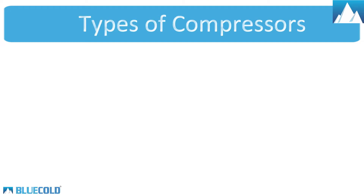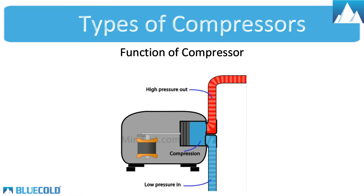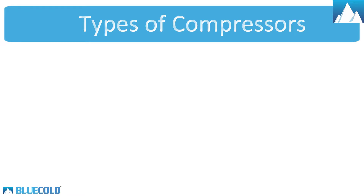Types of Compressors. Let's understand first, what is the main function of the compressor? The compressor will compress the refrigerant to a temperature greater than the ambient temperature. There are typically five different types of compressors. Based on their temperature range and cooling capacity, they have different functionalities.